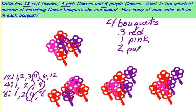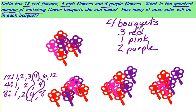One of the key words you'll look for is the greatest number of matching, and that's how you know that you're doing greatest common factor — when you're taking something and breaking it down into equal groups.